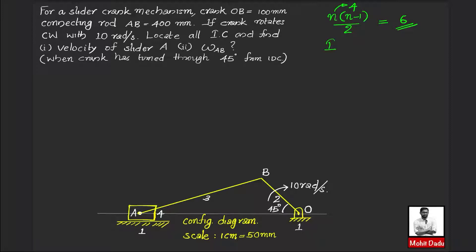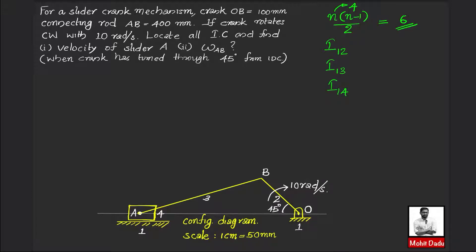Now we name the instantaneous centers. The links are numbered as follows: fixed link is 1, crank is 2, connecting rod is 3, and slider is 4. The six instantaneous centers from all combinations are: I12, I13, I14, I23, I24, and I34. Note that I21 = I12, I31 = I13, and so on — so we have exactly 6 unique instantaneous centers.